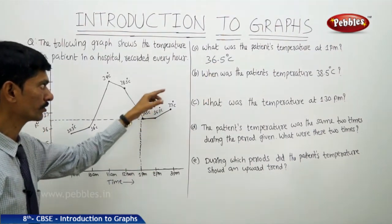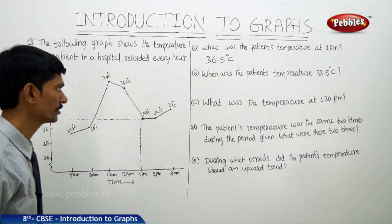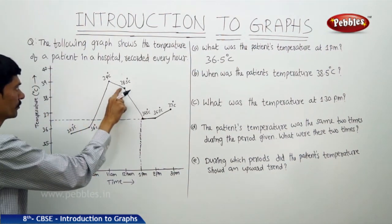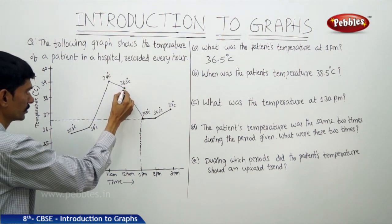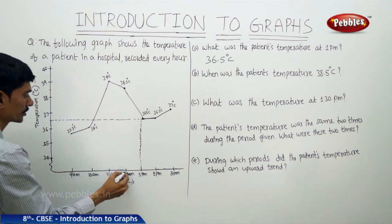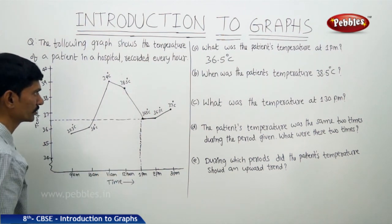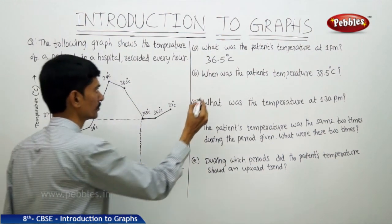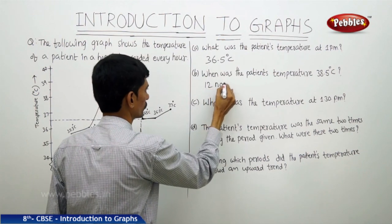The second question: when was the patient's temperature 38.5°C? The value 38.5°C is marked on the y-axis. Drawing a horizontal line from that point, it meets the graph at 12 noon. So the patient's temperature was 38.5°C at 12 noon.